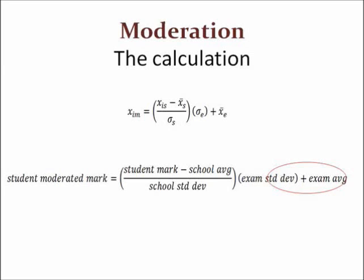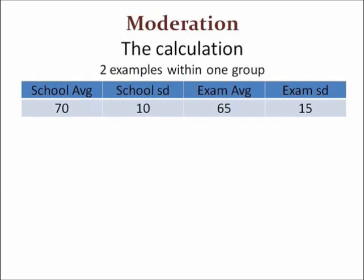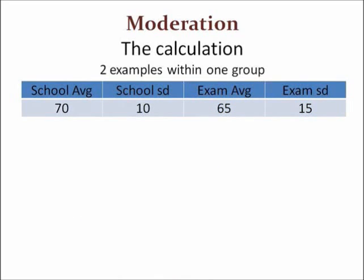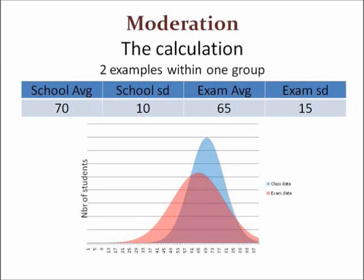Now for a couple of examples. We have a class with a school mark average of 70 and a standard deviation of 10, suggesting that 68% of students had a school mark between 60 and 80. We also have an exam average of 65 and a standard deviation of 15, suggesting 68% of students got between 50 and 80. So while the curves look the same, the horizontal scale is different. When expressed on the same graph and scale, they would look like this.